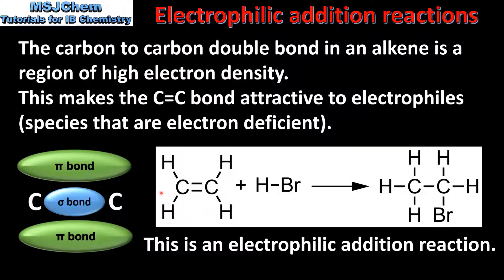Here we can see an example of an addition reaction. In the reaction we have an alkene, which is ethene, reacting with hydrogen bromide to produce a halogeno alkane. The pi bond is broken and the hydrogen and bromine atoms are added to the molecule. This is known as an electrophilic addition reaction because the hydrogen bromide is acting as an electrophile.